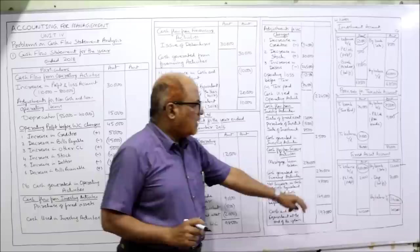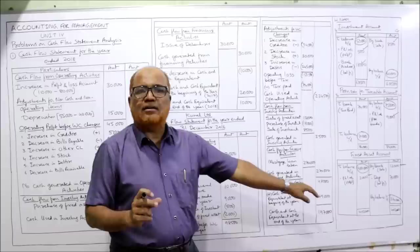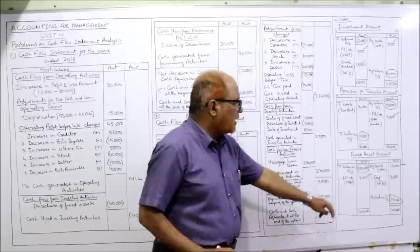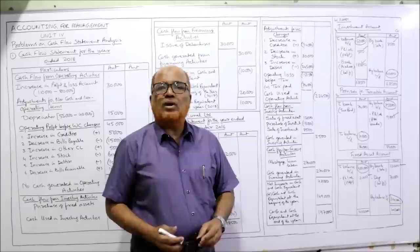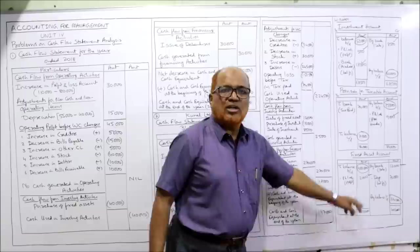Debit side: to P&L account — profit 2,000. Debit side total: 4,00,000 plus 2,000 equals 4,02,000. From 4,02,000 deduct 3,20,000 and deduct 12,000. The balancing figure is 70,000 — credit side is less, and the reason is depreciation. Balancing figure: depreciation 70,000. Depreciation is a non-cash item, so it should be taken under non-cash non-operating items: 70,000.